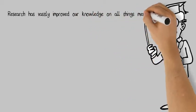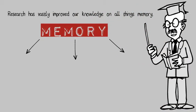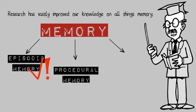Research has vastly improved our knowledge on all things memory. In temporally graded retrograde amnesia, there are three memory types that are usually affected. The first is episodic memory, which is made up of an individual's experiences in a lifetime, like prom night. This is usually the most affected memory type.